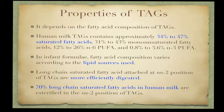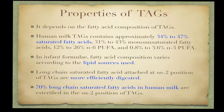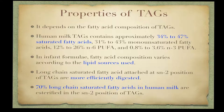The properties of milk triglycerides depend on their fatty acid composition. Mature human milk typically contains approximately 34 to 48 percent saturated fatty acids, mainly palmitic acid; approximately 31 to 43 percent monounsaturated fatty acids; approximately 12 to 26 percent omega-6 polyunsaturated fatty acids; and 0.8 to 3.6 percent omega-3 family polyunsaturated fatty acids.